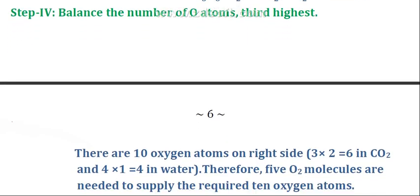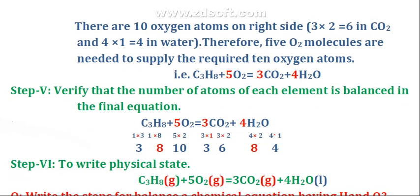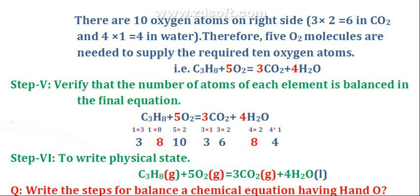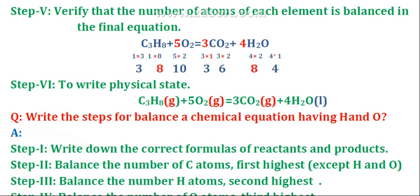Step four: balance the number of oxygen atoms — the third highest. In the above equation, there are 10 oxygen atoms on the right-hand side: 3 into 2 equals 6 in CO2, and 4 into 1 equals 4 in H2O; so 6 plus 4 equals 10. On the reactant side, we put a coefficient with oxygen equal to 10, so 5 multiplied by 2 gives 10. Coefficient 5 is placed before the oxygen molecule. Step five: verify the number of atoms of each element is balanced in the final equation.